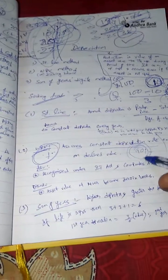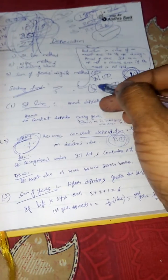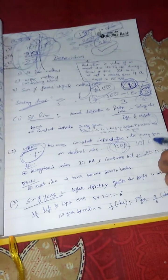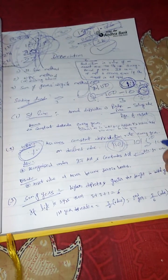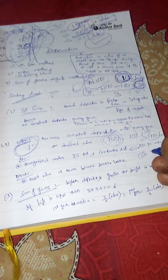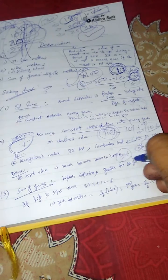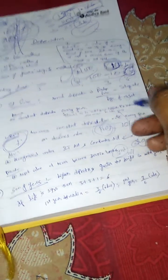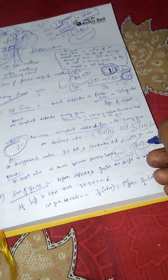Let us assume the depreciation rate as 10%. So in the same example, my depreciation in the first year will be 10% of 100 — 10% of value of asset — that is 10 rupees. Then remaining balance of the asset will be 90. In second year, my depreciation will be 10% — same 10% — of not 100 but 90, because value of asset has already been reduced to 90.